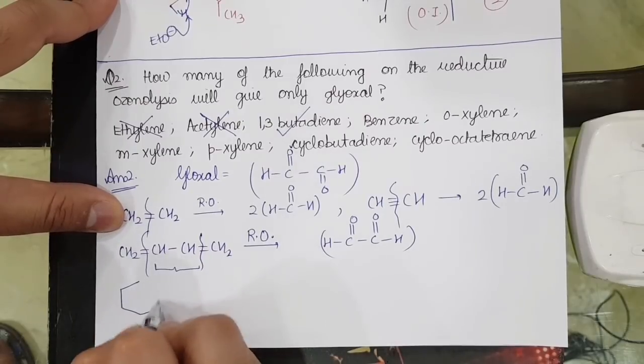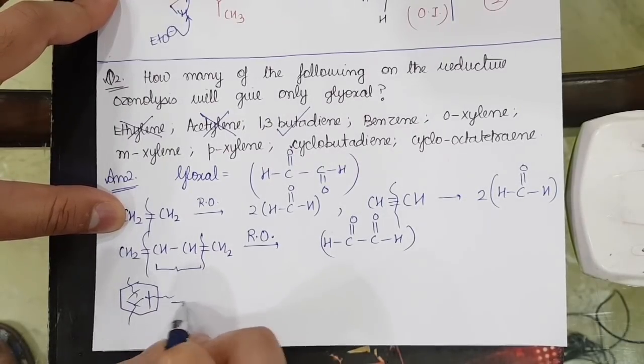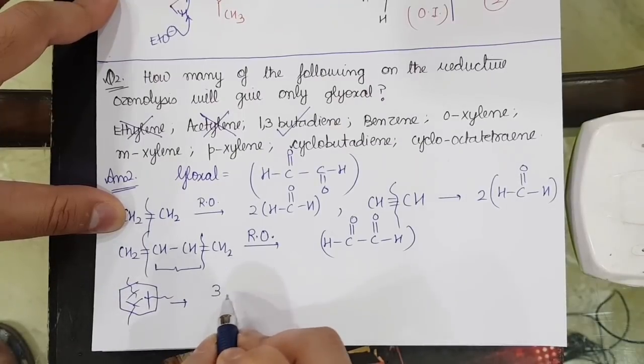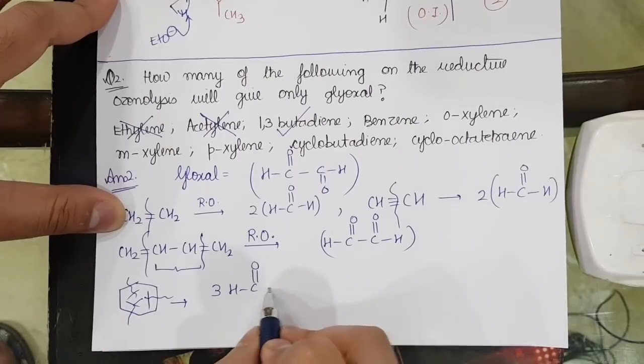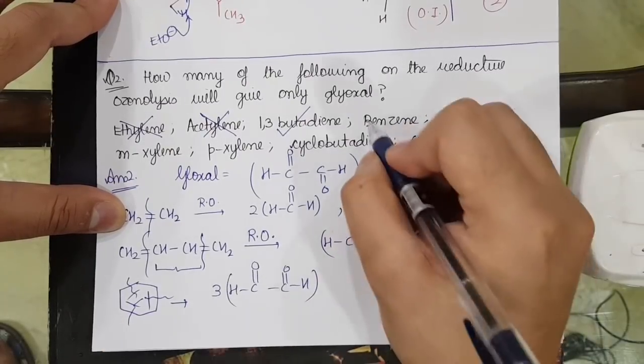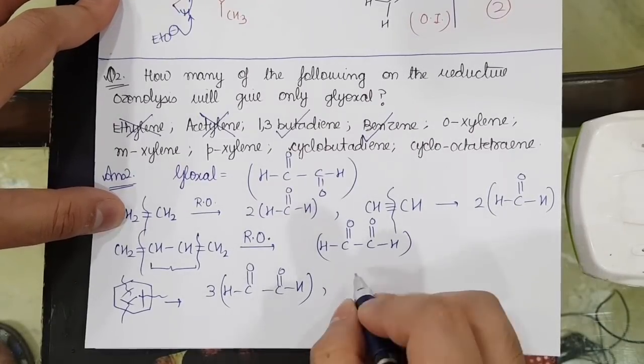In benzene, what happens? If I take benzene and do reductive ozonolysis, break the bonds, you will get the formation of 3 moles of HC double bond OH, C double bond OH, C double bond OH. So once again glyoxal is forming. So benzene also gives glyoxal.